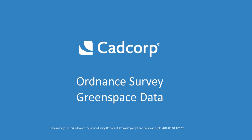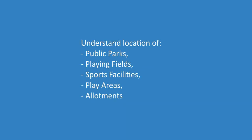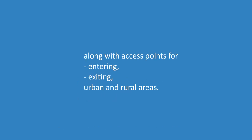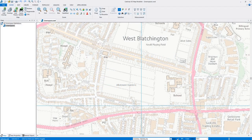The Ordnance Survey green space dataset helps us understand the location of public parks, playing fields, sports facilities, play areas and allotments, along with access points for entering and exiting urban and rural areas.